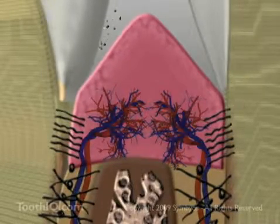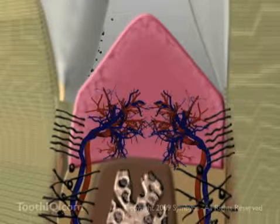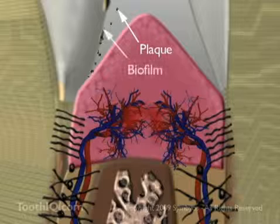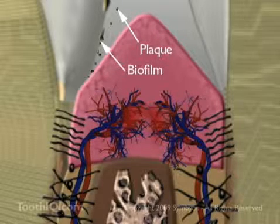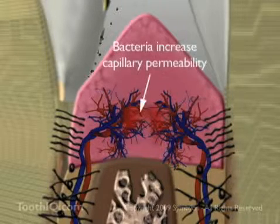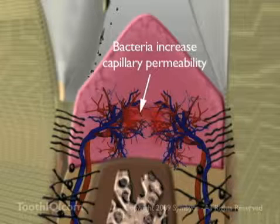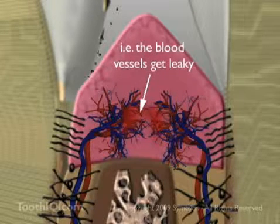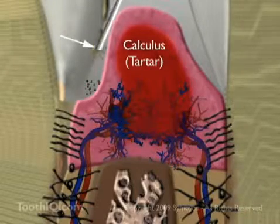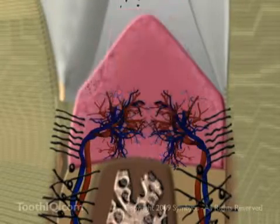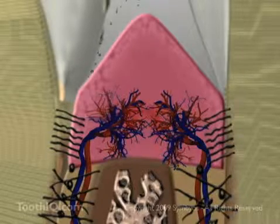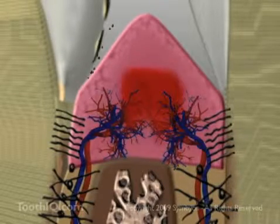During meals, food debris accumulates in the sulcus. When mixed with mouth bacteria and proteins from saliva, plaque and less obvious biofilm are formed. Both are harmful to teeth and periodontal structures. Left in place on the teeth, bacterial plaque and biofilm begin to mineralize, forming hardened deposits called calculus, which can only be removed with dental instruments.